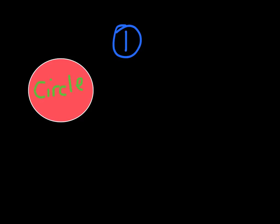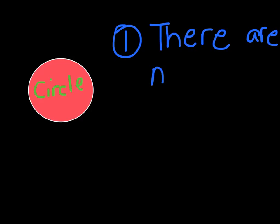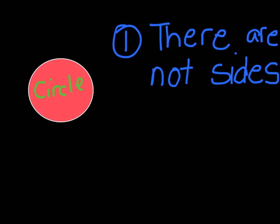Our third shape is going to be a red circle. The circle has one rule: there are no sides. That means the circle is pretty much just a circle — you can't say it has four sides or five sides. It has no sides. That's exactly what a circle is.